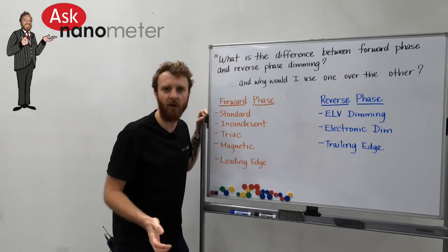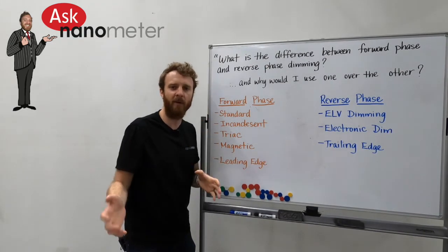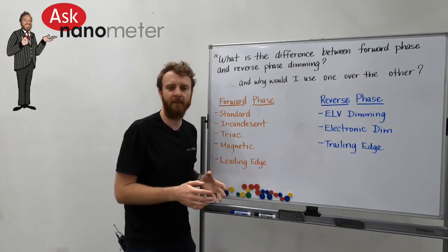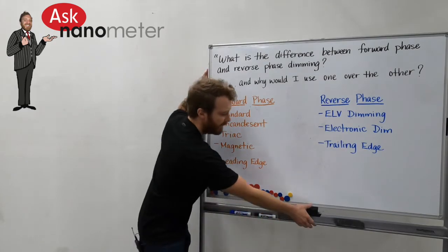Both types of dimming are high voltage dimming methods and they rely on the power coming from the grid and manipulating that in order to dim the product that's attached at the other end.